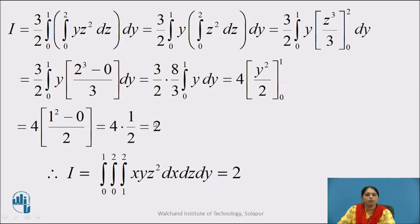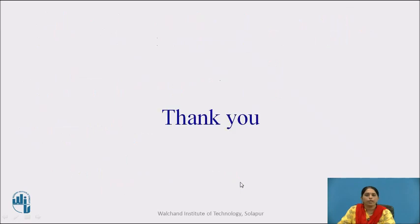Substituting the limits: 4 times (1²/2 − 0) = 4 times 1/2 = 2. Therefore, the integral from 0 to 1, integration from 0 to 2, integration from 1 to 2, of x·y·z² dx dz dy equals 2. Thank you.